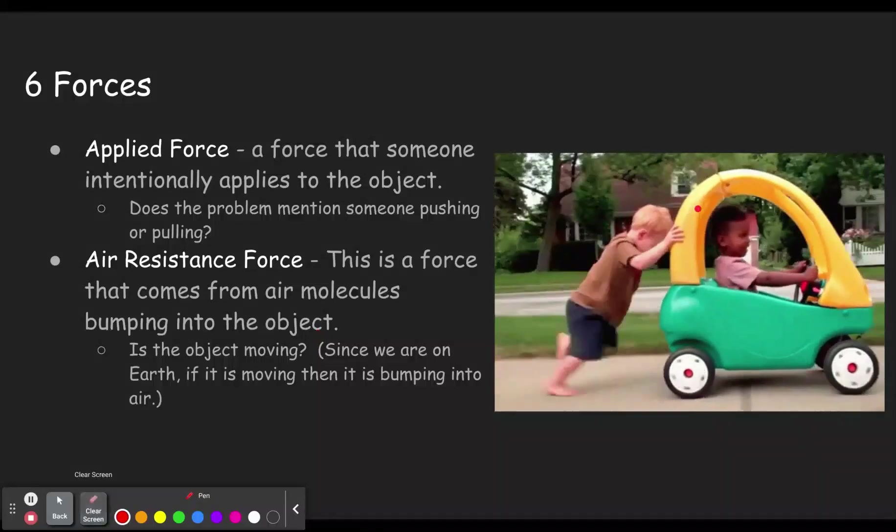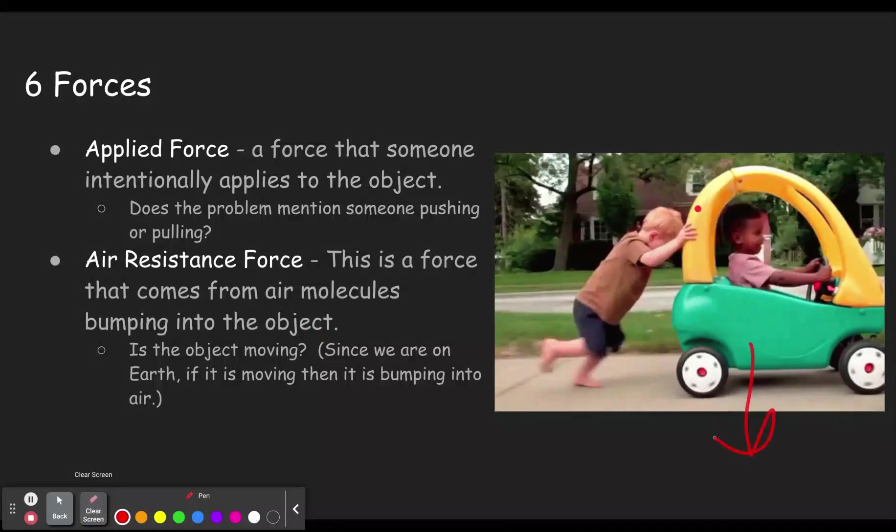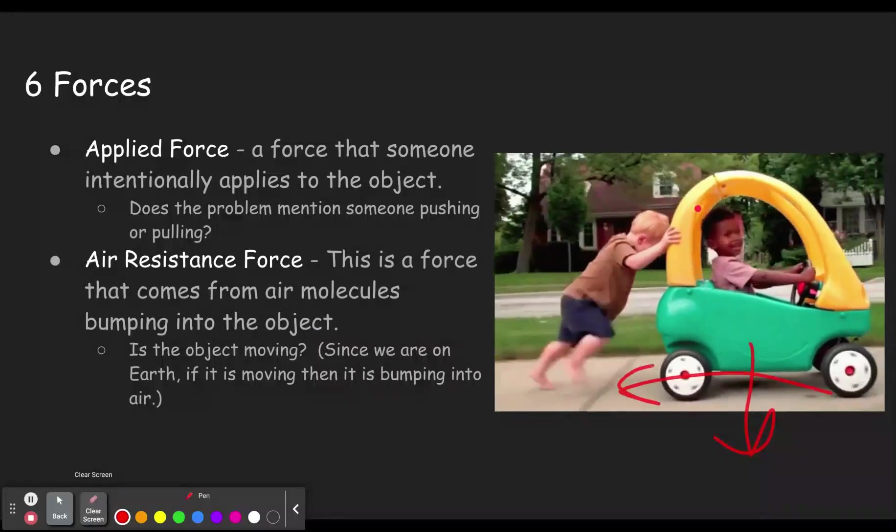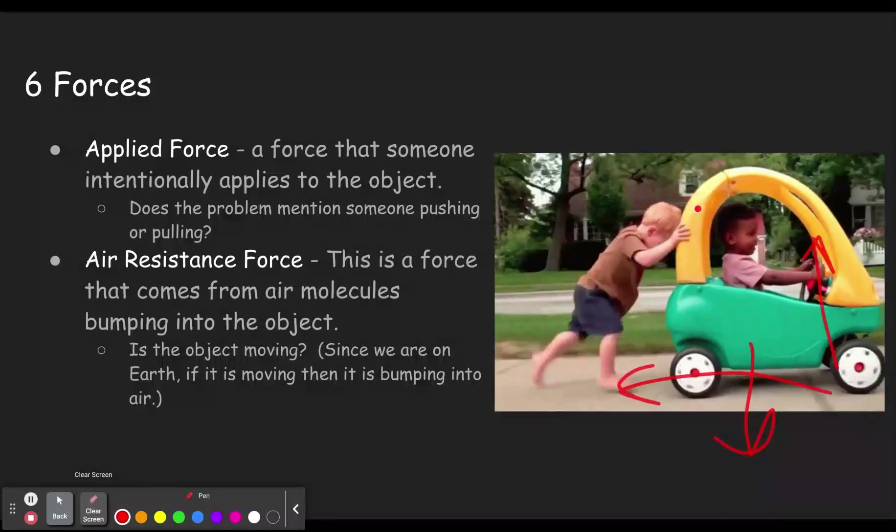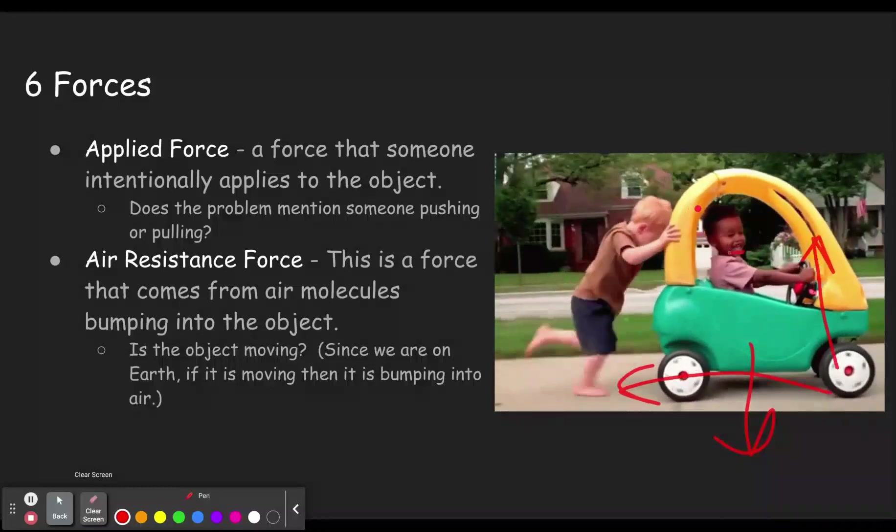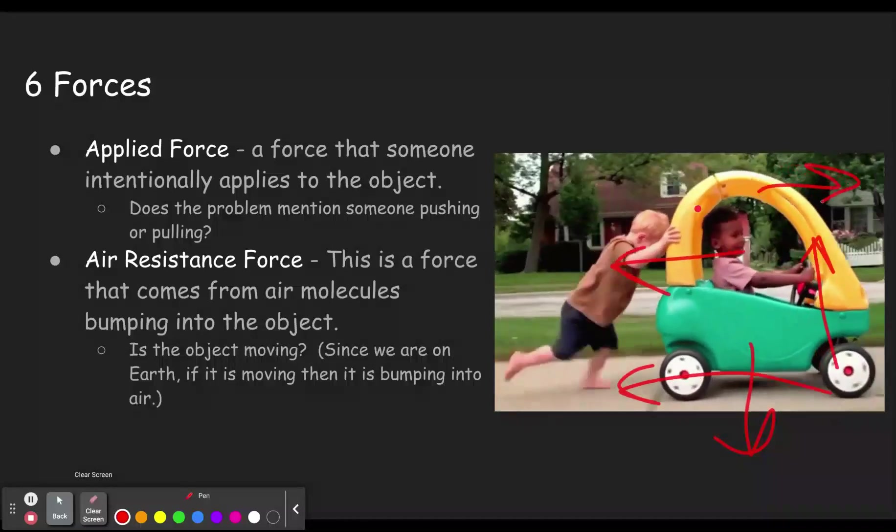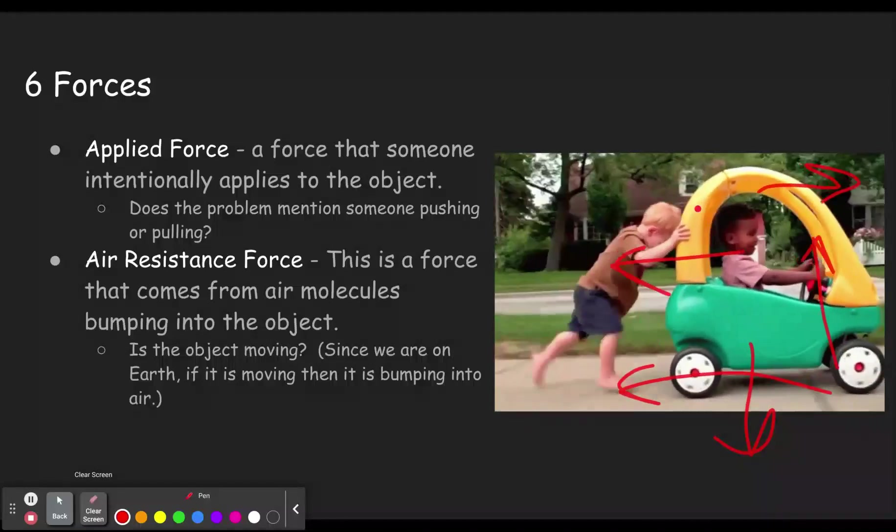Applied force pushing on the car. By the way, this would also have gravity pulling on the car. It would have friction pushing on the car. And it would have a normal force pushing on the car, along with the air resistance and the applied. So that would have five of the six right there. The only thing missing is tension.